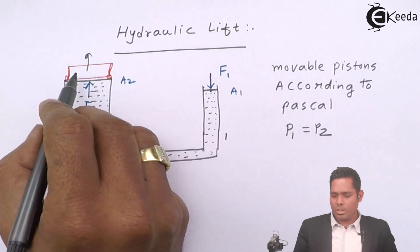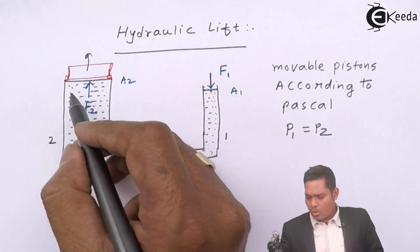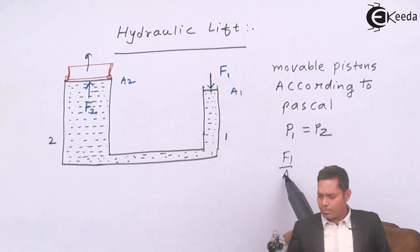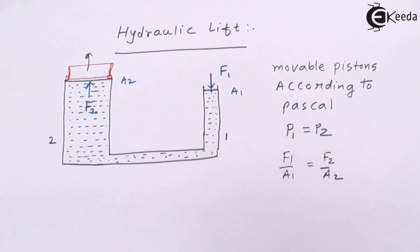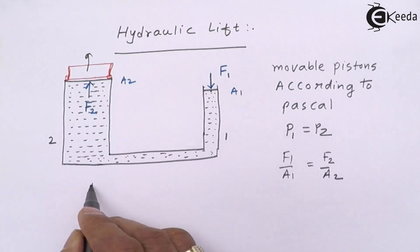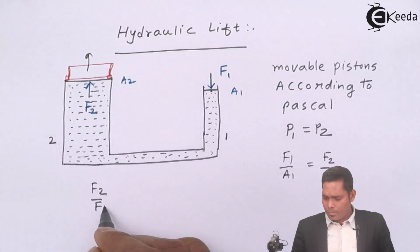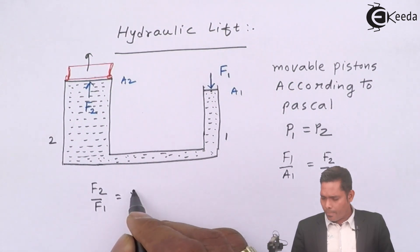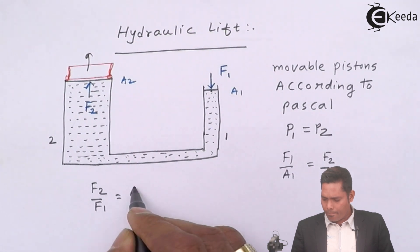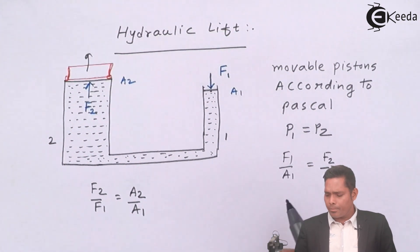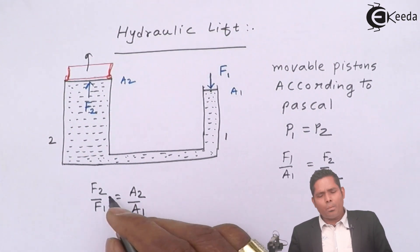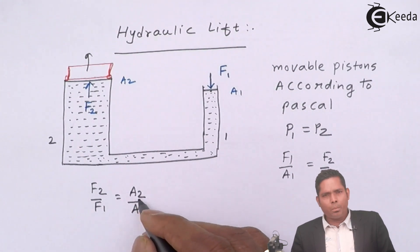According to Pascal's law, the pressure here and the pressure here must be the same. So pressure here is F1 upon A1, and pressure here is F2 upon A2. From this, F2 upon F1 equals A2 upon A1.